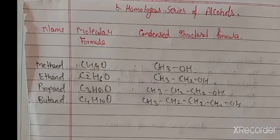Next, ethanol. One carbon is methane, two carbons: here CH3-CH2-OH group is attached. So the homologous series containing hydroxyl group is known as methanol, ethanol, propanol, butanol.